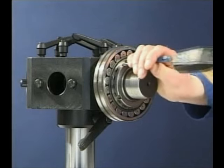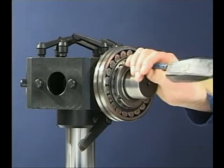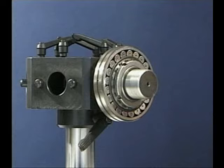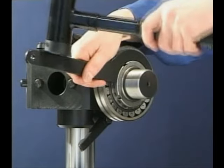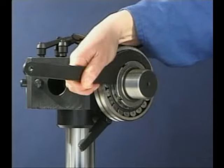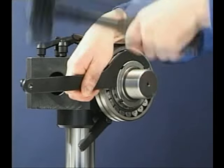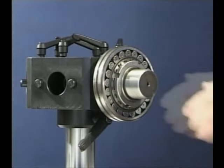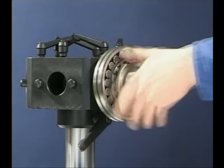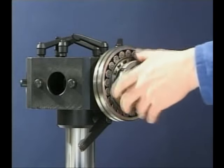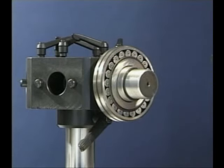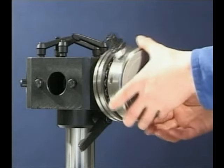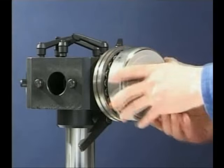To dismount a spherical roller bearing with a tapered bore, the lock washer tab is driven back and the lock nut loosened using a lock nut spanner. This application is designed to remove the bearing with a hydraulic nut. It requires a recessed collar between the bearing and the shaft shoulder.